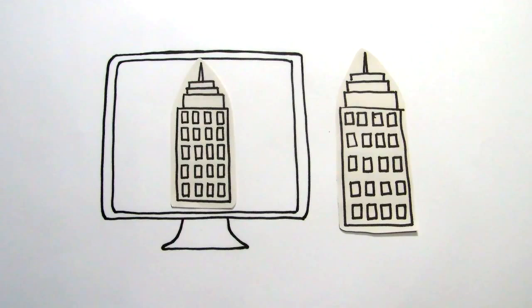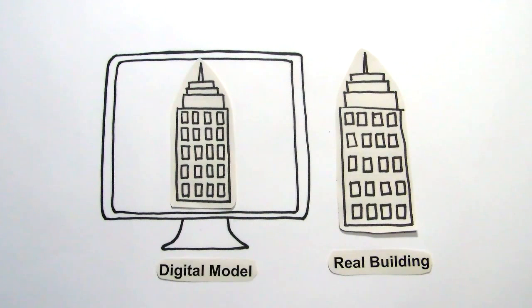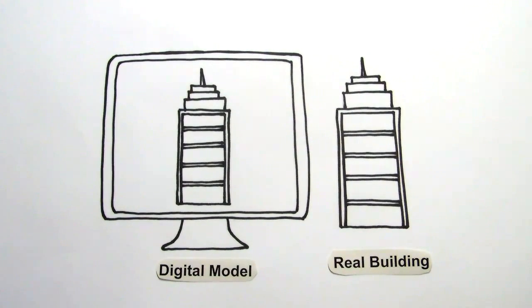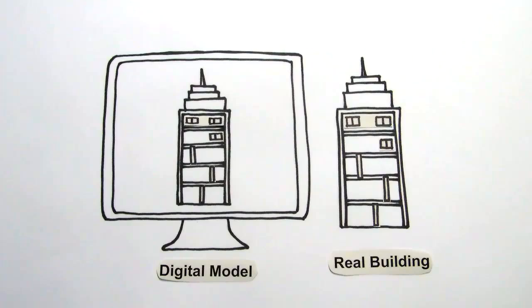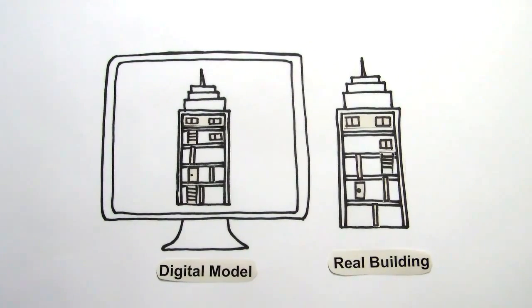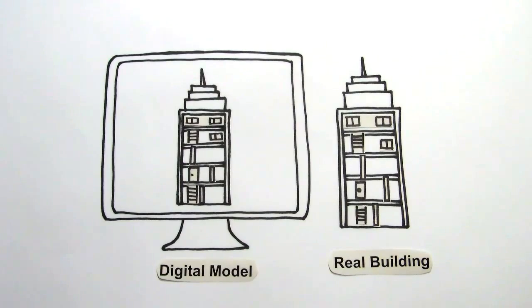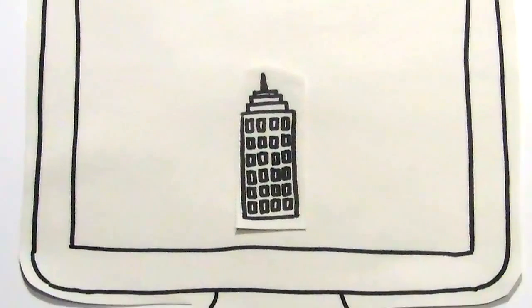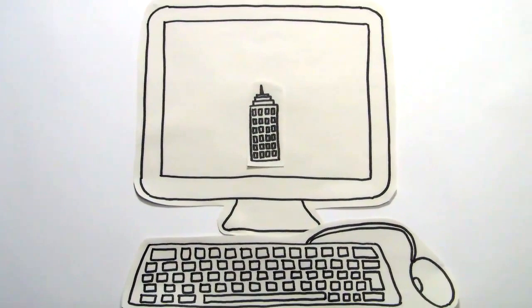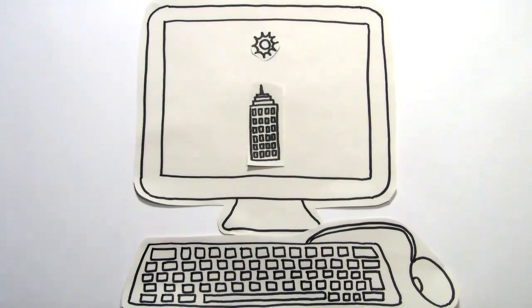A true BIM model consists of the virtual equivalence of the actual building sections used to create a building. These intelligent elements are the digital prototype of the physical building elements such as walls, columns, windows, doors, stairs, etc., that allow us to simulate the building and understand its behavior before the actual construction begins.